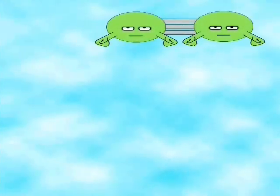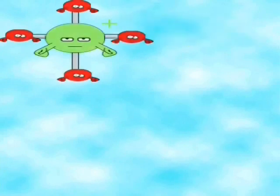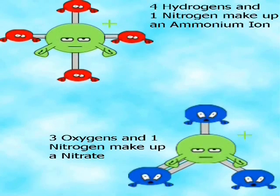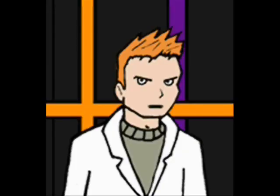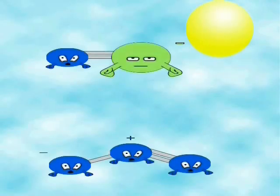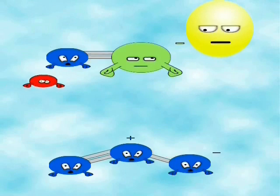Nitrogen is most abundant in the atmosphere. However, it's not biologically available to the organisms on the earth. To make nitrogen biologically available, it must be fixated in either an ammonium ion or a nitrate. The fixating reactions are all part of the nitrogen cycle. First, we'll start off with atmospheric fixation, which has two kinds of fixation reactions. The first kind of reactions are the photoreactions. In the photoreactions, light instigates a reaction with nitric oxide and the ozone molecules.